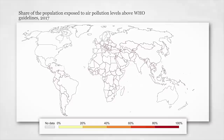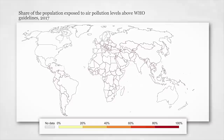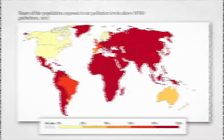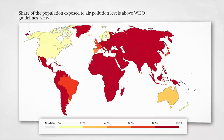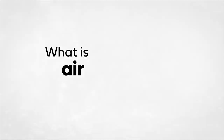Deep red would indicate the majority of the population of a country, while yellow would indicate a low proportion. Perhaps you're expecting to see a cluster of red countries in West Africa, Southeast Asia, big population centers, with the rest being yellow. Well, 95% of the world's population is exposed to mean annual levels of air pollution that exceed World Health Organization guidelines. This isn't a low-income country problem. This is a global problem.